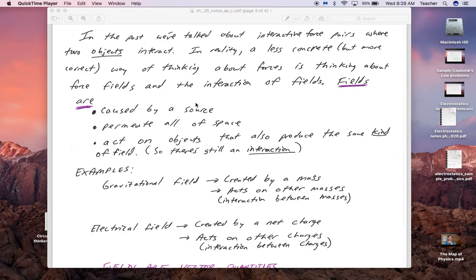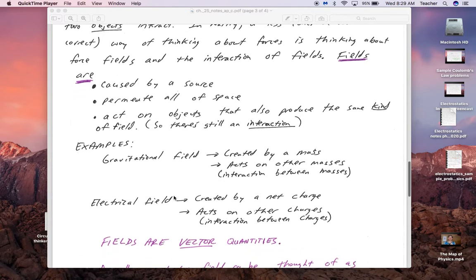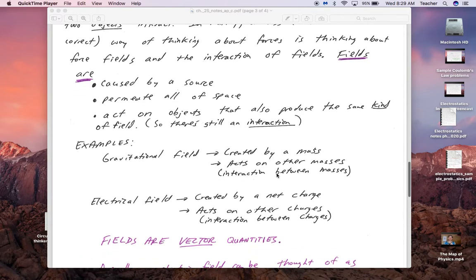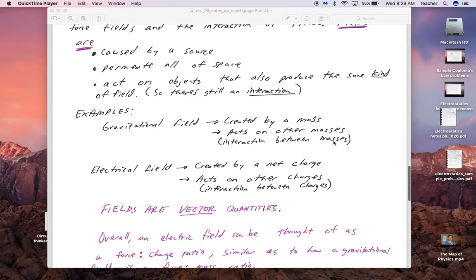Most people are pretty comfortable with gravitational forces and fields. They can't see or feel electrical forces normally on a small scale, so we can use an analogy to help out. Fields are caused by a source, they permeate all of space, and they act on objects that also produce the same kind of field. For example, gravitational field is created by a mass and it acts on other masses.